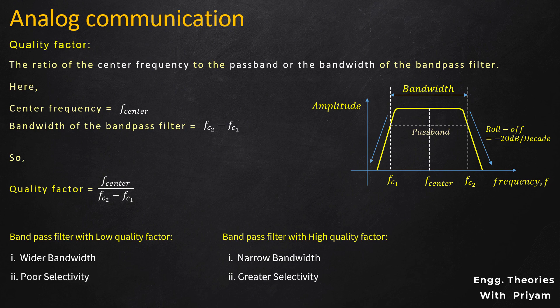To generate SSB-SC modulated signal, we need a bandpass filter with a higher quality factor. Generally, the ideal range for the quality factor for SSB-SC modulation is from 1200 to 2000. As the quality factor of the bandpass filter increases, it also increases the cost of the bandpass filter. So when we try to increase the quality factor to achieve accuracy of SSB-SC modulation, the cost of modulation also increases — that's why it is very difficult and costly to accurately generate SSB-SC modulated signal using the DSB-SC modulator.